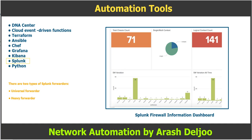The universal forwarder is the most commonly used type and is more lightweight than its counterpart. Universal forwarders do not do any pre-processing but send the data as they collect it — that is, raw data. This results in more transmitted data.